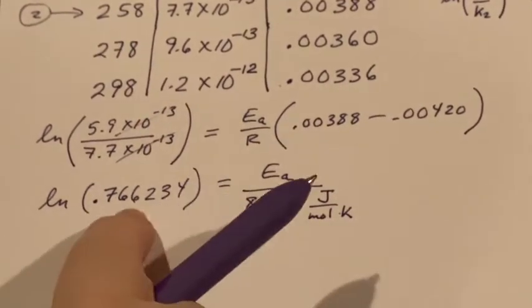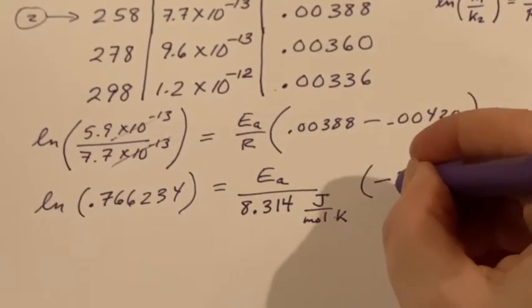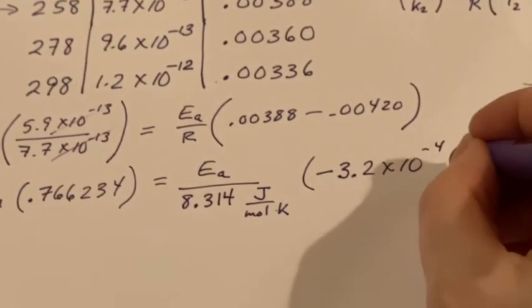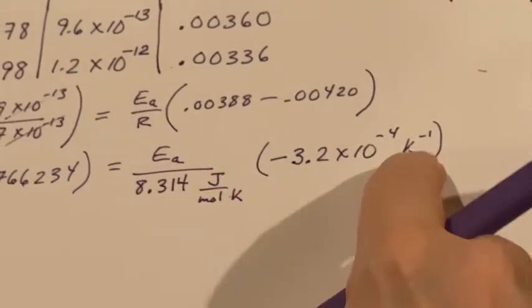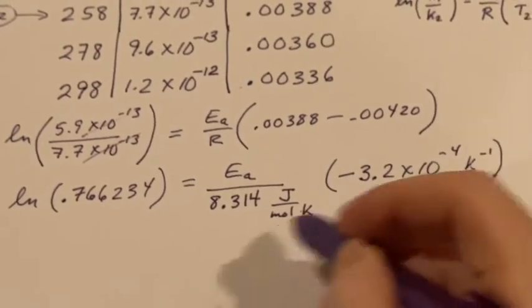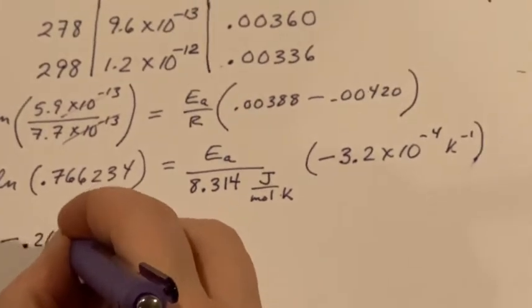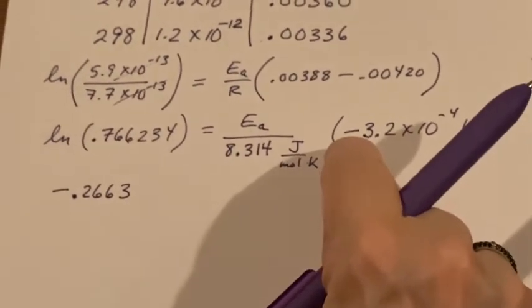Here's E sub a which I'm looking for, and R should be the 8.314 joules per mole kelvin. That being a logarithm, this should be a pure number, a negative 3.2 times 10 to the negative fourth, and this is inverse kelvin.